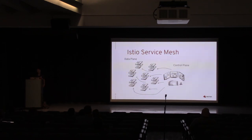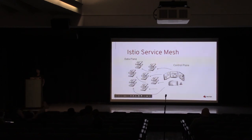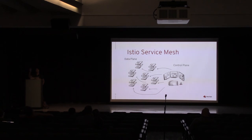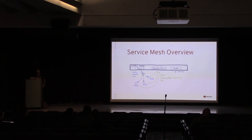All the sidecars are the data plane of Istio, and you have a control plane feeding policies back to the sidecars. The sidecars give back metrics to the control plane, which sends them to Prometheus, and you can use Grafana to visualize it.